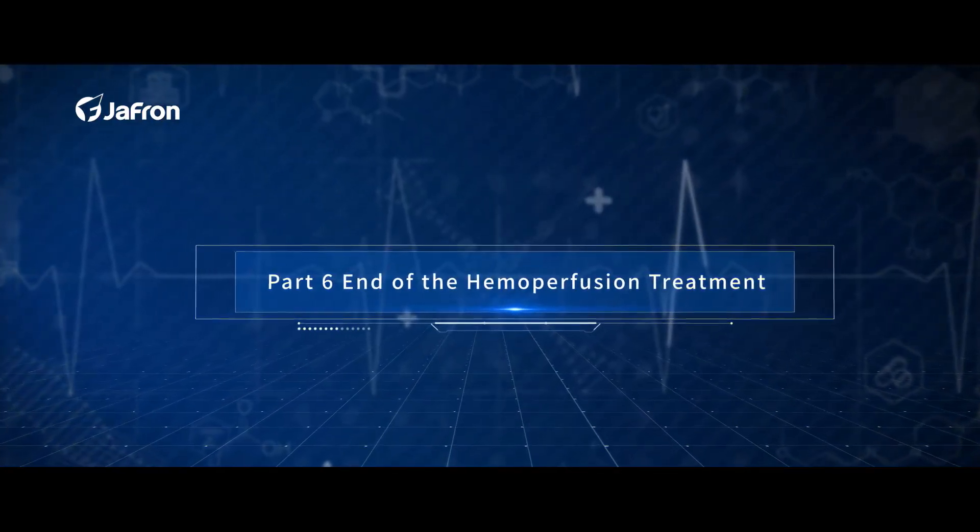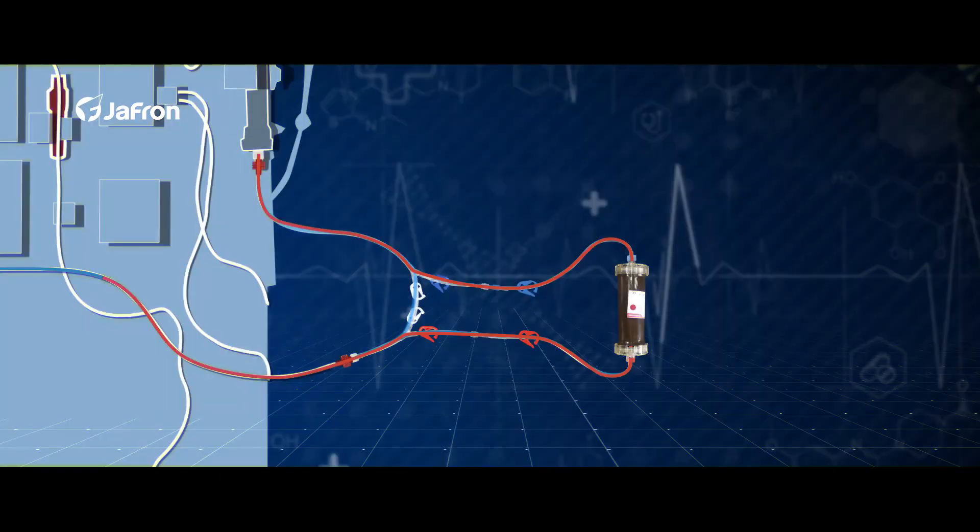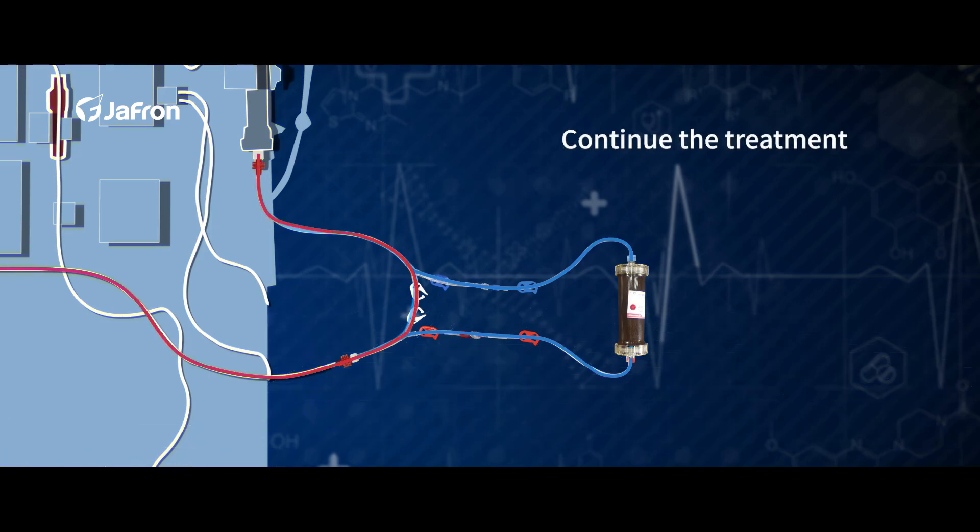Part 6: End of hemoperfusion treatment. Use normal saline to return the blood from the cartridge. Open the white clips, clamp the red and blue clips before and after the cartridge. Continue the treatment.